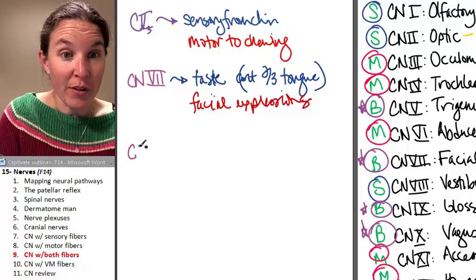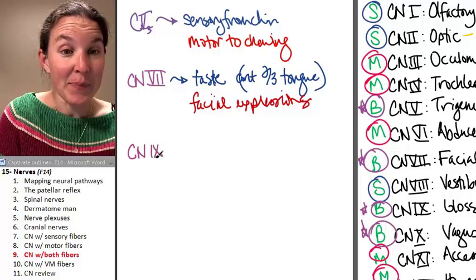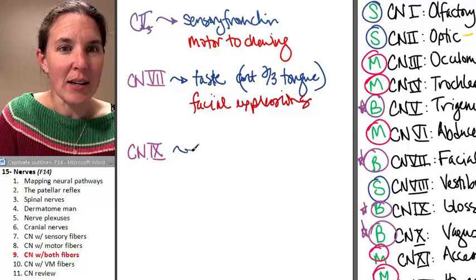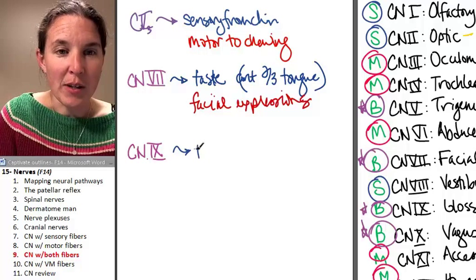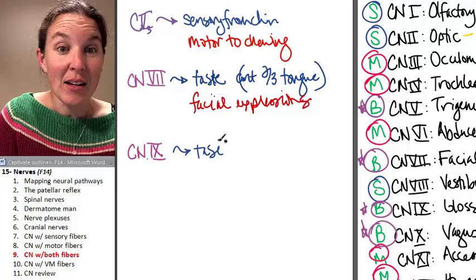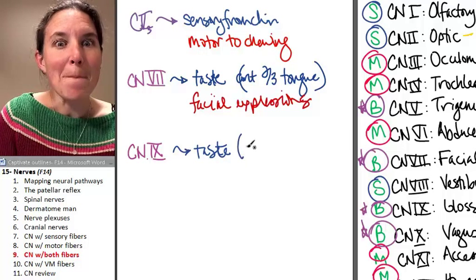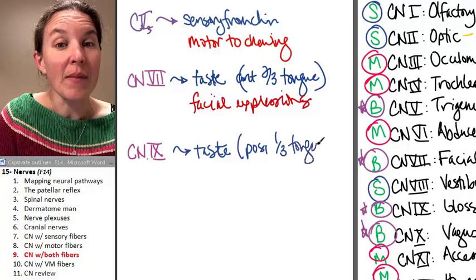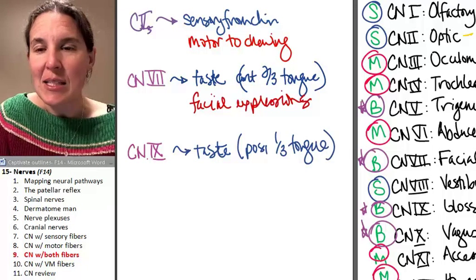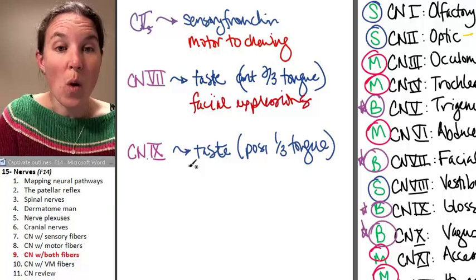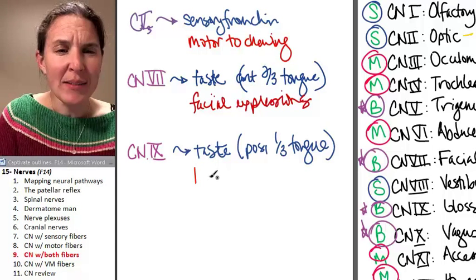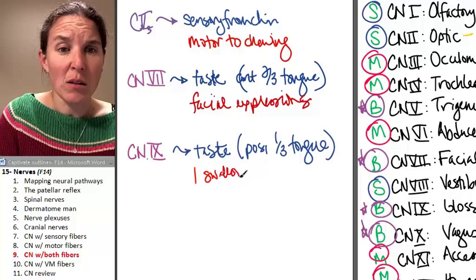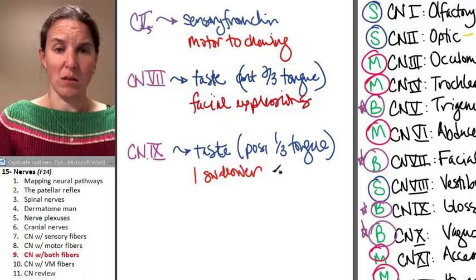Glossopharyngeal, cranial nerve 9. Glossopharyngeal does, guess what? I'm not going to tell you how I remember this one. It does taste from the posterior one-third of your tongue, and it does motor to one swallowing muscle. A swallower.